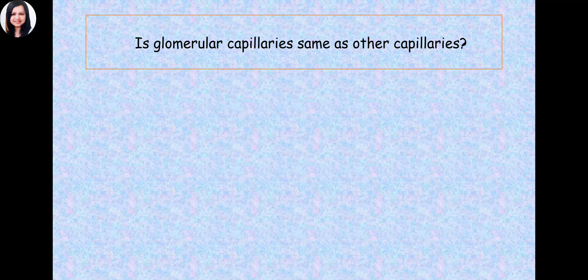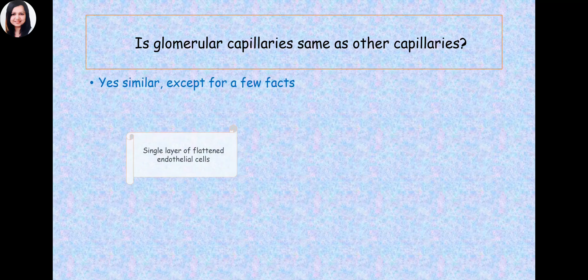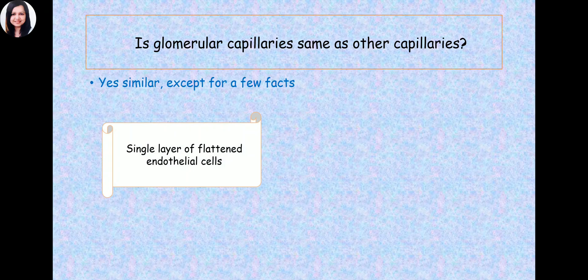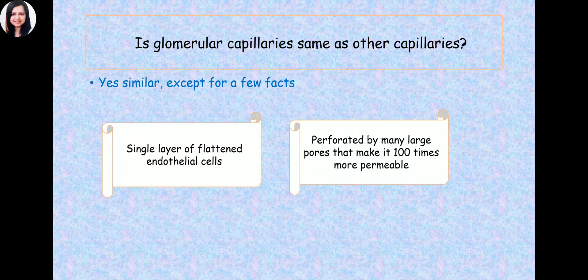Are glomerular capillaries the same as other capillaries? They are similar except they consist of a single layer of flattened endothelial cells, whereas other capillaries in the body have many layers. Another difference is that the glomerular capillaries are perforated by many pores, making them 100 times more permeable to water and solutes than capillaries elsewhere in the body. These pores are 8 nanometers or 80 angstroms in size, and they are negatively charged — so they repel negatively charged particles and attract positive and neutral ones.